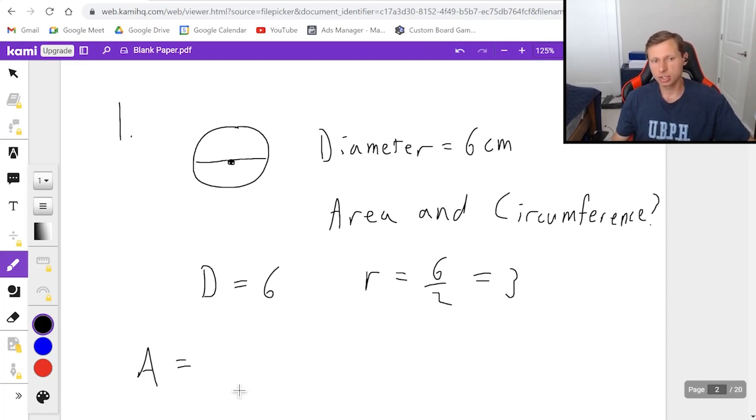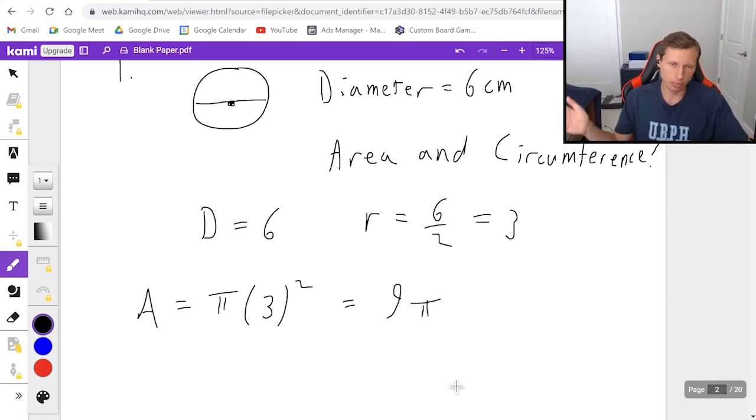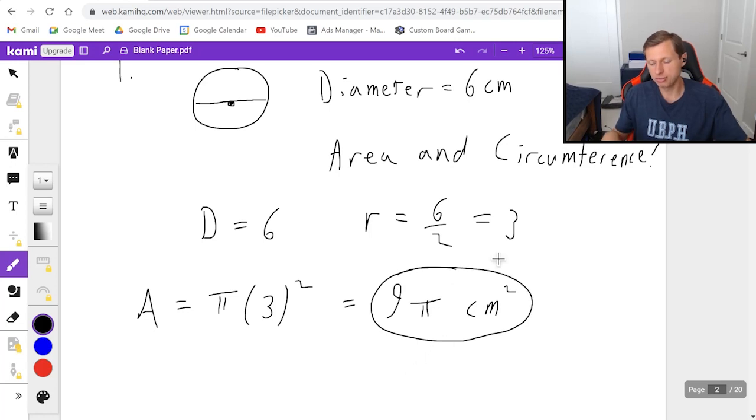So my area A is going to be pi times R squared, pi times 3 squared, which is going to be 9 pi. And yes, technically pi is like 3.14. It technically goes on forever. But I'm just going to leave my answer as 9 pi. Most teachers will accept that. And then the units, since it's an area, the units are centimeters squared. So that's it for the area.